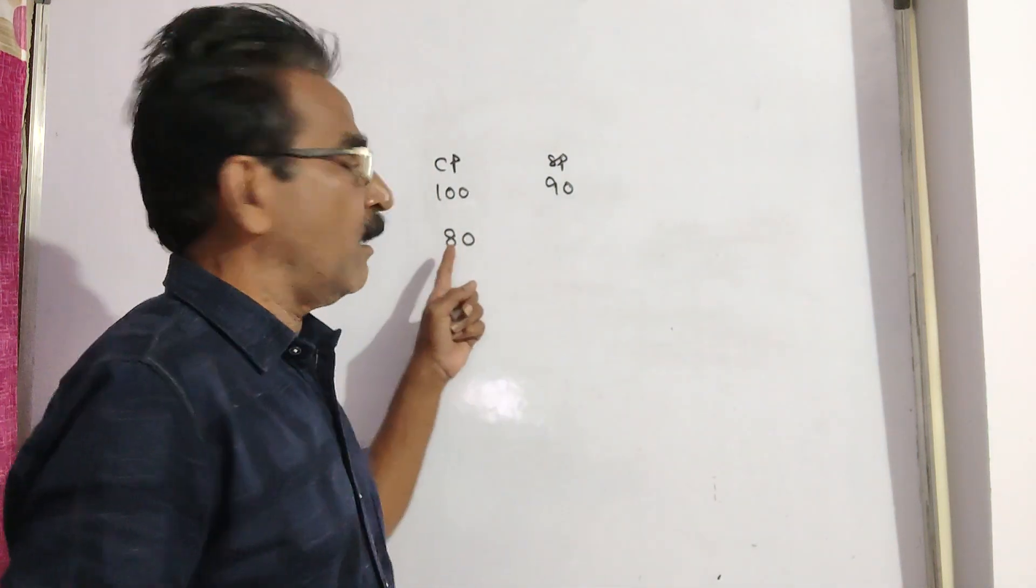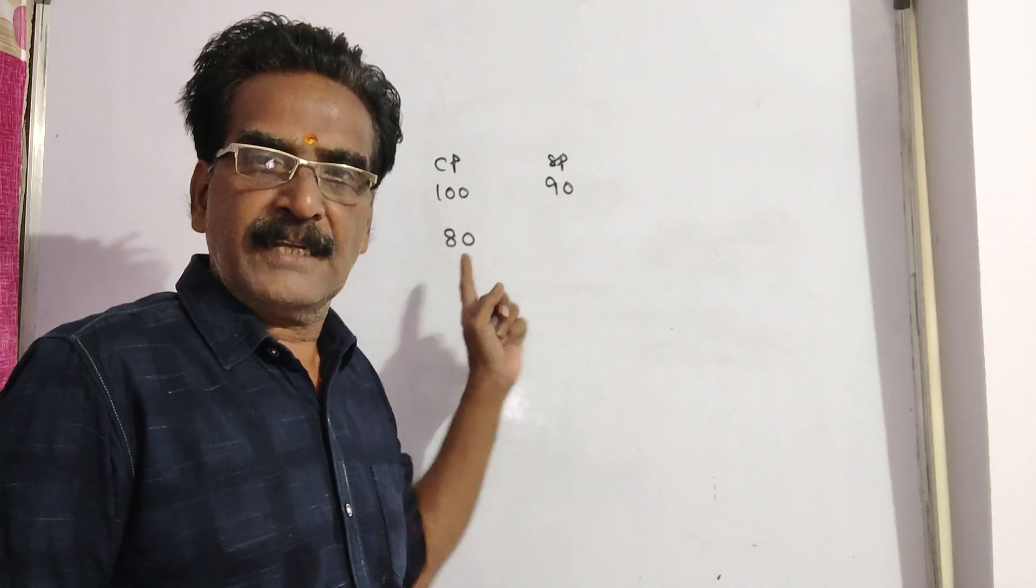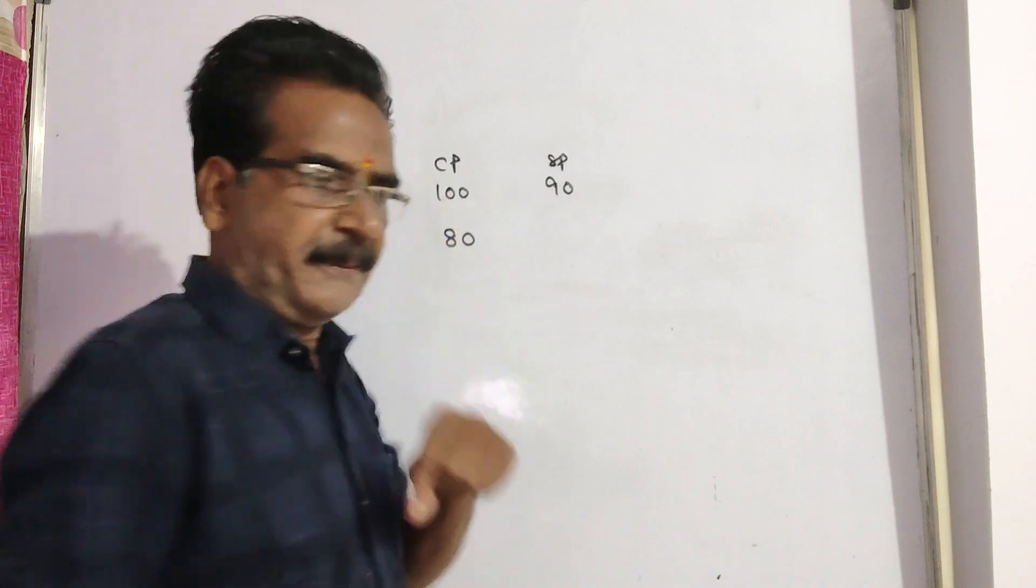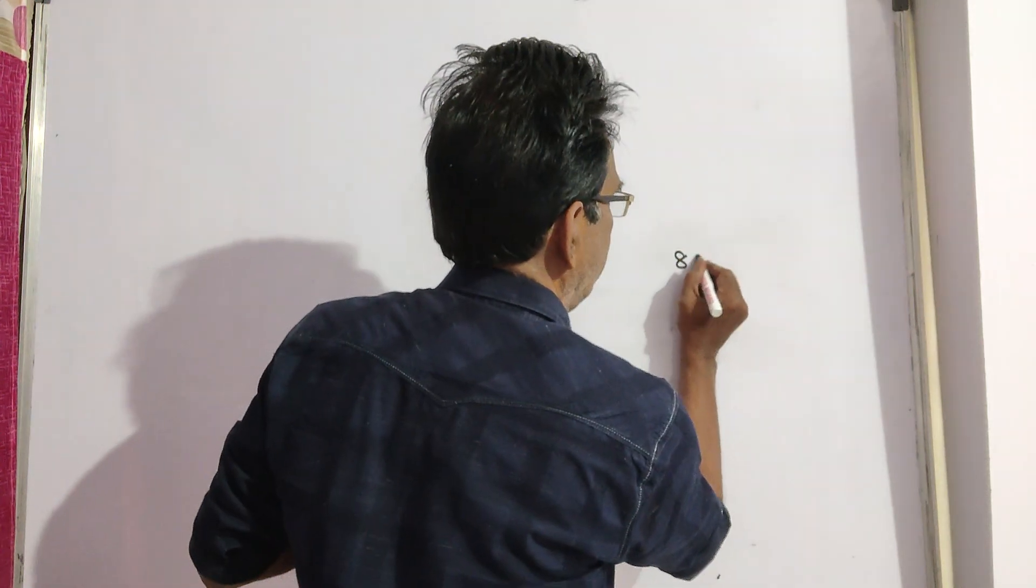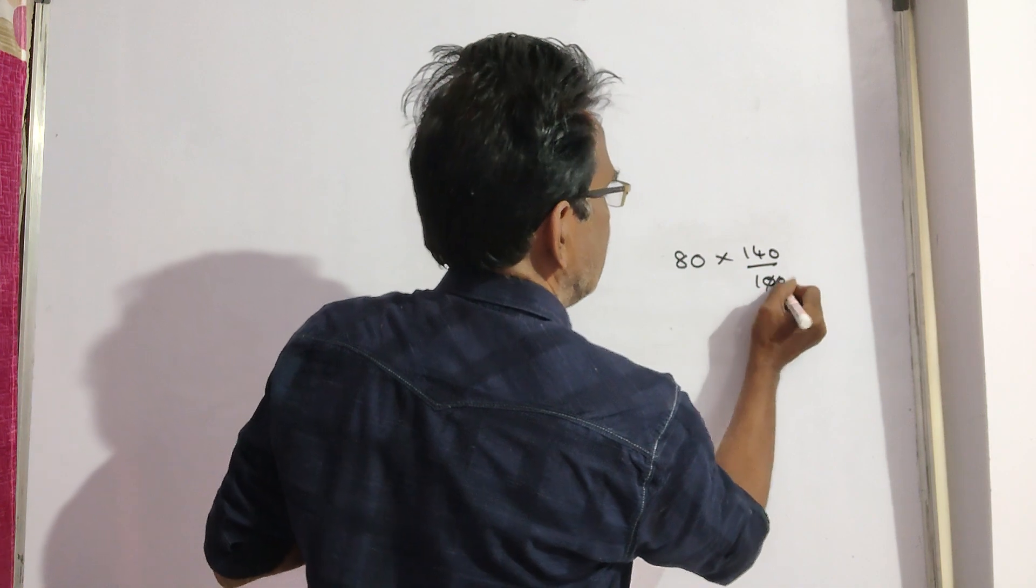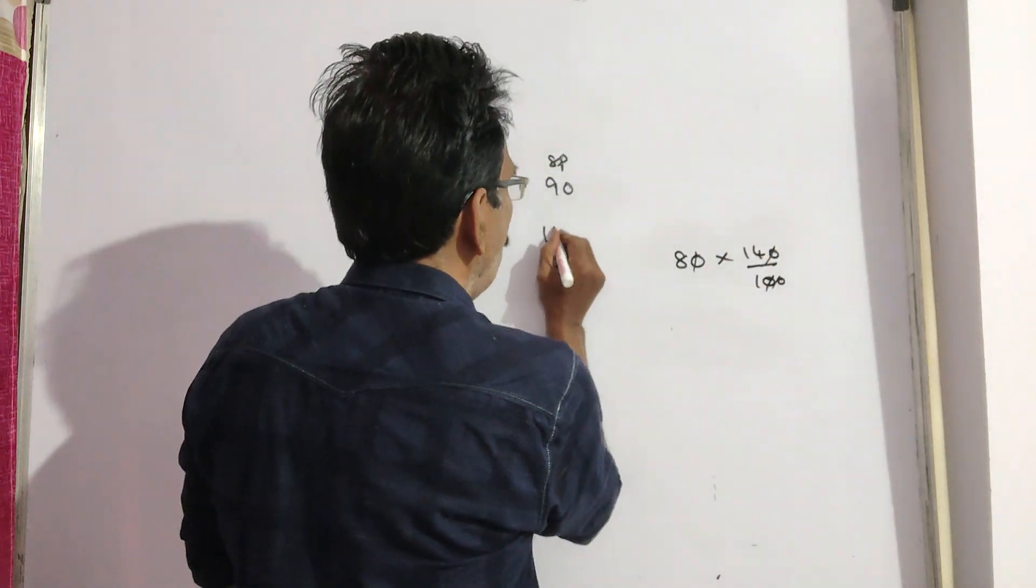40% gain on rupees 80. If 40% gain on rupees 80, then the selling price will be 80 into 140 by 100, that is equal to 112.